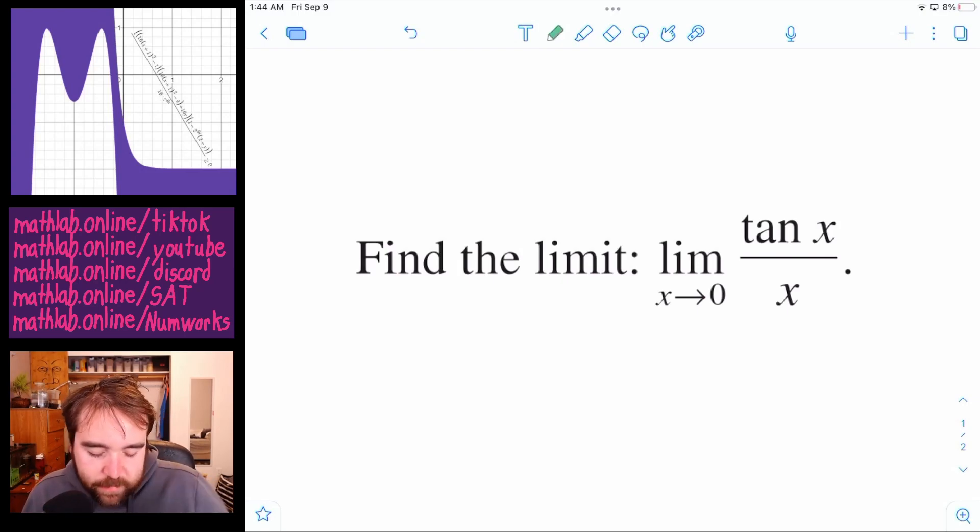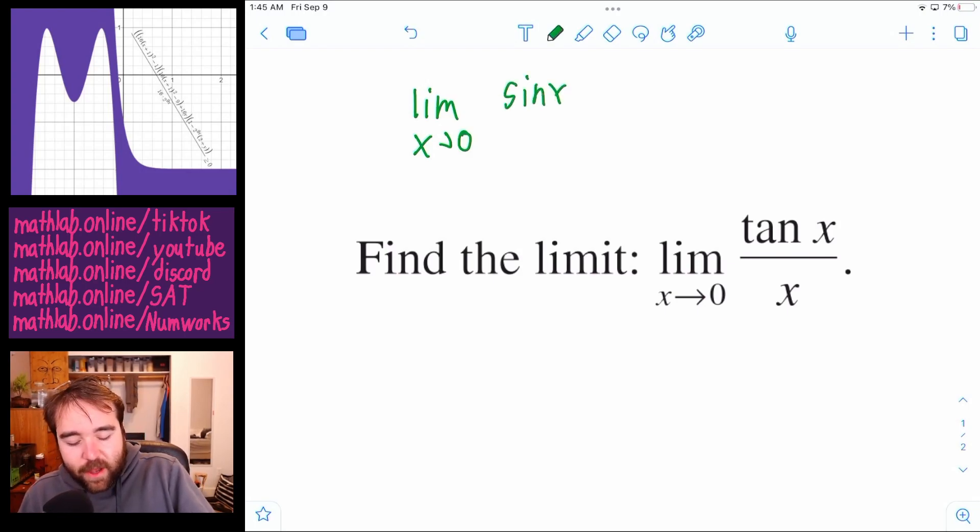And actually, there's two limits we have to just know to be able to solve this one. So we have to just know that the limit, I guess there's only one limit we have to know for this one. We have to know the limit as x approaches zero of sine of x over x is one.